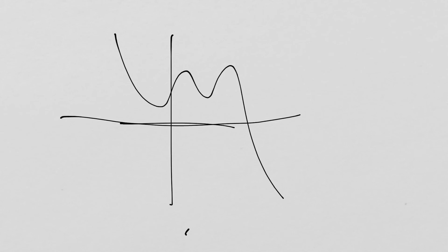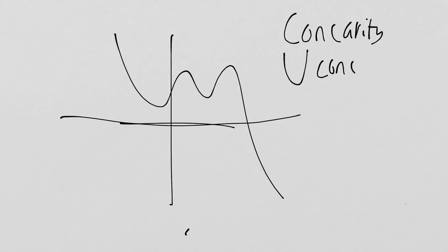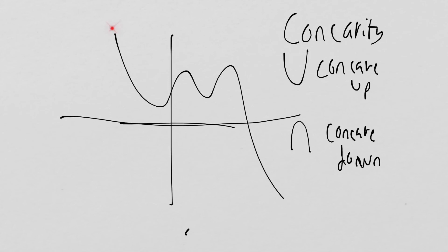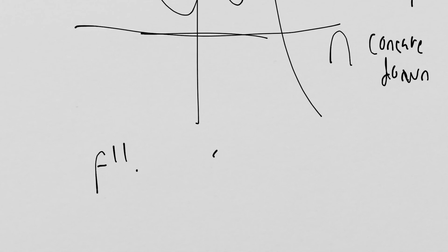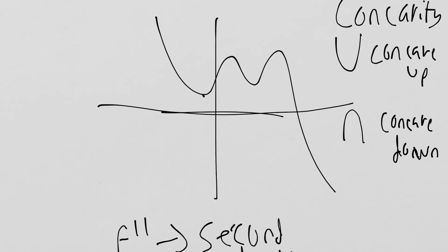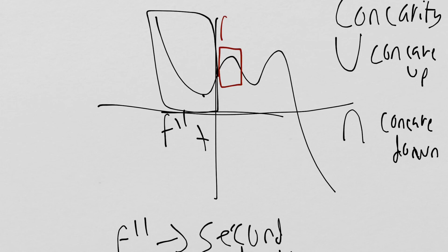There's also something about curves having to do with their steepness called concavity, which talks about how the function is curved. If it's concave up, it looks like a cup opening upward. If it's concave down, it curves downward. Along a curve there can be places where it's concave up, then concave down, alternating. The second derivative, f double prime, tells us about concavity. When f double prime is positive, the function is concave up, and when f double prime is negative, the function is concave down.